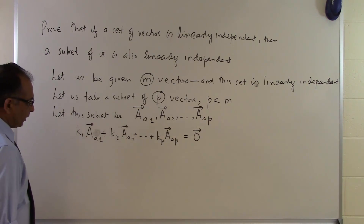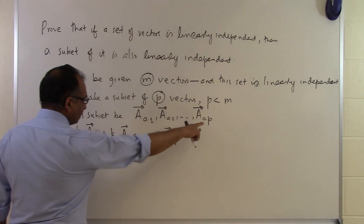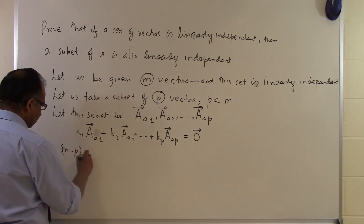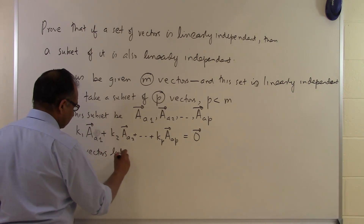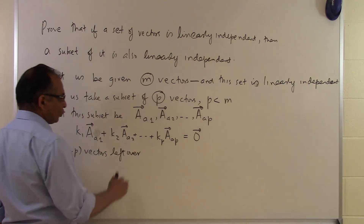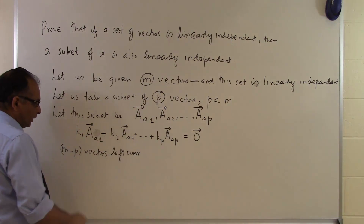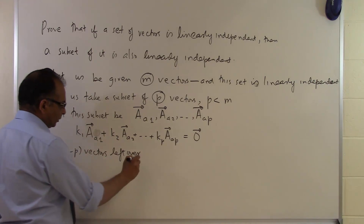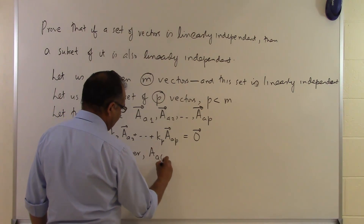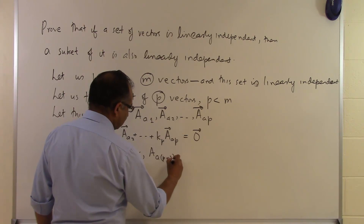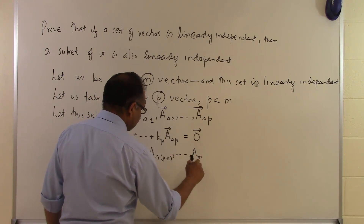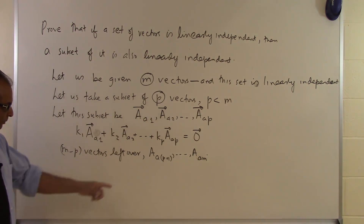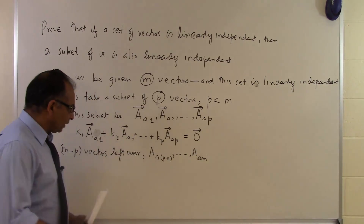Now, if we have chosen p vectors out of the m vectors, there are m minus p vectors left over which we are not including in this subset. Let's call those remaining vectors ap+1 all the way up to am. So we have m minus p vectors left over.